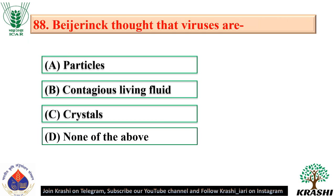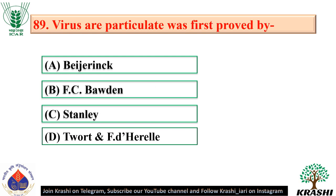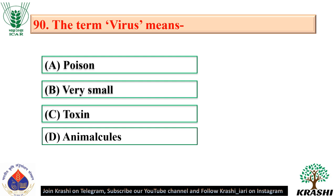Question number 88: Beijerinck thought that viruses are contagious living fluid — option B. Question number 89: Virus as particulate was first proved by Stanley. Question number 90: The term virus means poison.